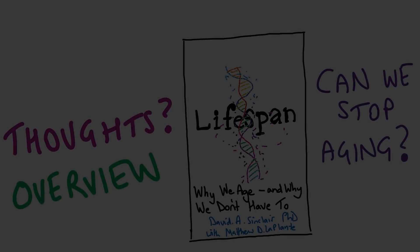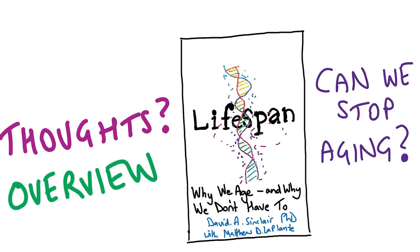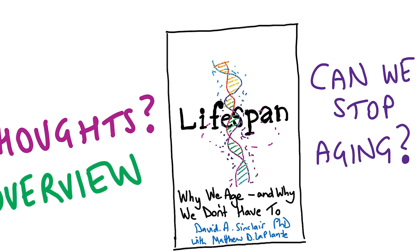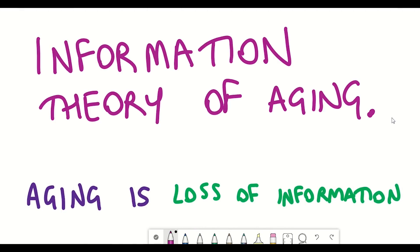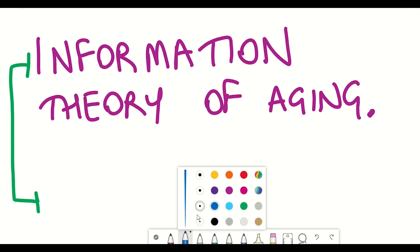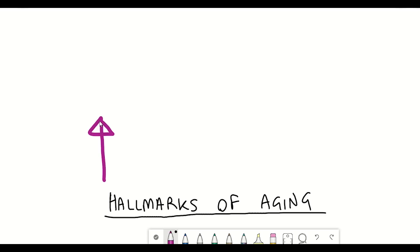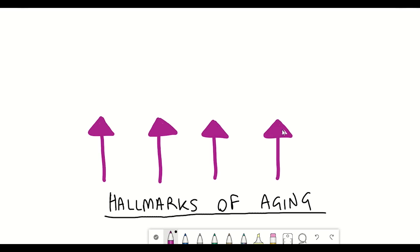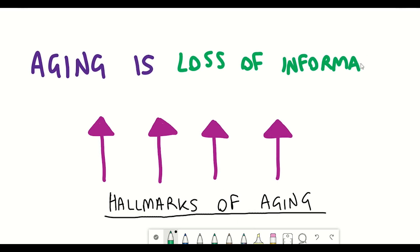I first learned about this study when I read David Sinclair's book Lifespan, which is where we shall begin. If you haven't read his book or watched my summary video on it, you first need to understand that David explains the ageing process using Claude Shannon's mathematical theory of communication, whereby David states that ageing is simply loss of information — a universal mechanism that can be considered on top of all of the individual hallmarks of ageing.